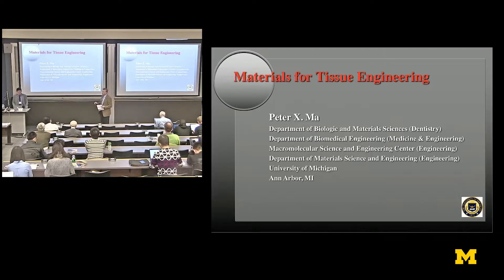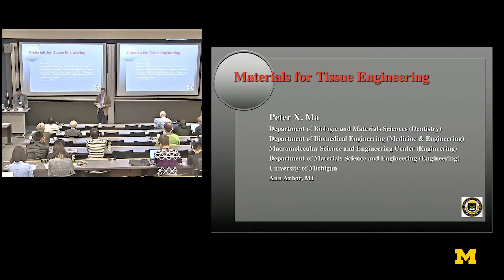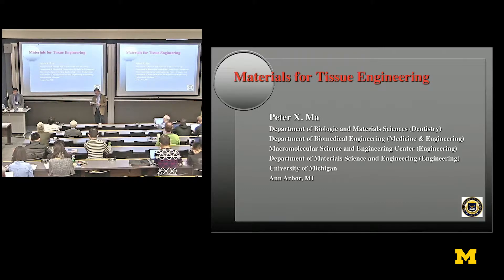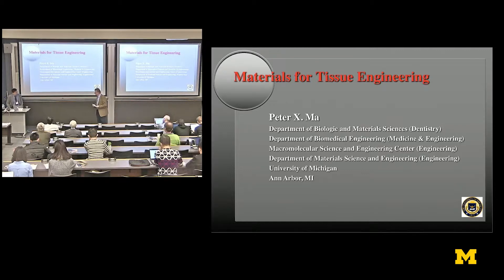He has received a number of distinctions. He has been named one of the top 100 material scientists in 2011 by Thomson Reuters. He is a fellow of the American Institute of Biological Engineering, a fellow of Biomaterials and Science Engineering, a fellow of the Materials Research Society, and a fellow of the American Association for the Advancement of Science. Today he's going to talk about materials for tissue engineering.